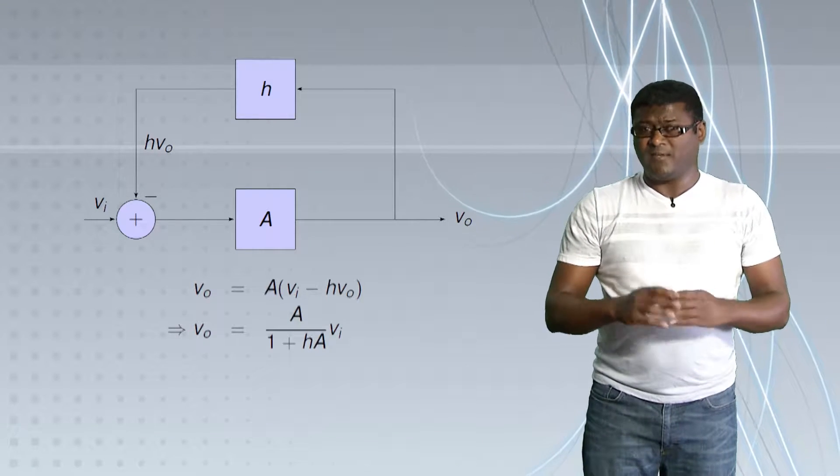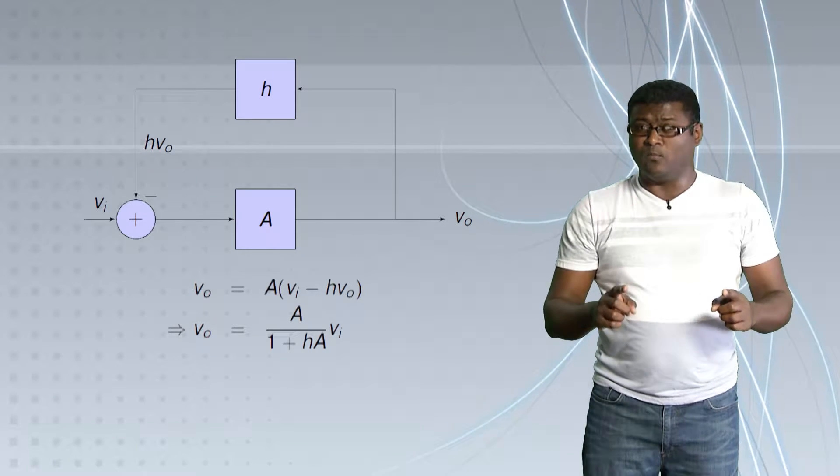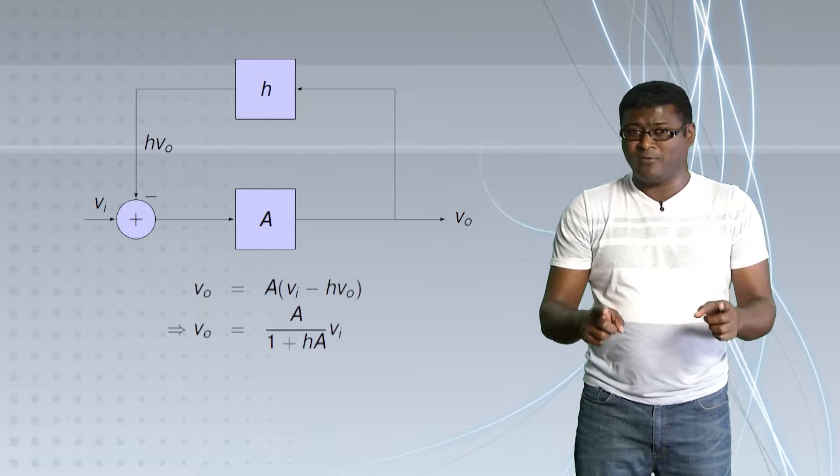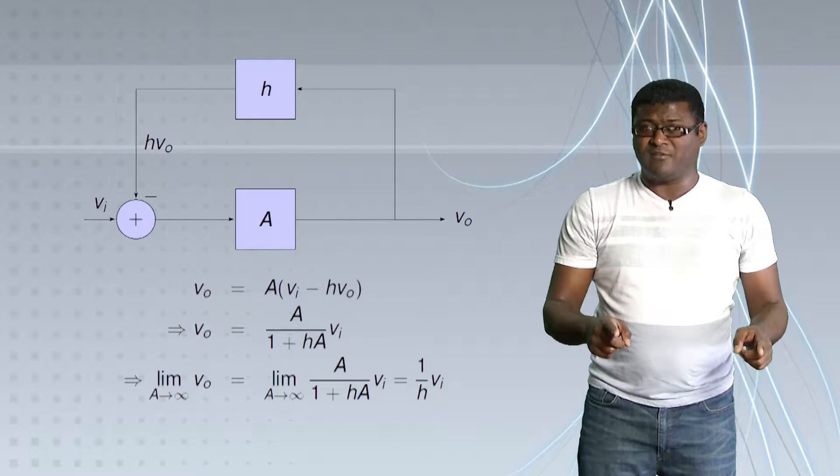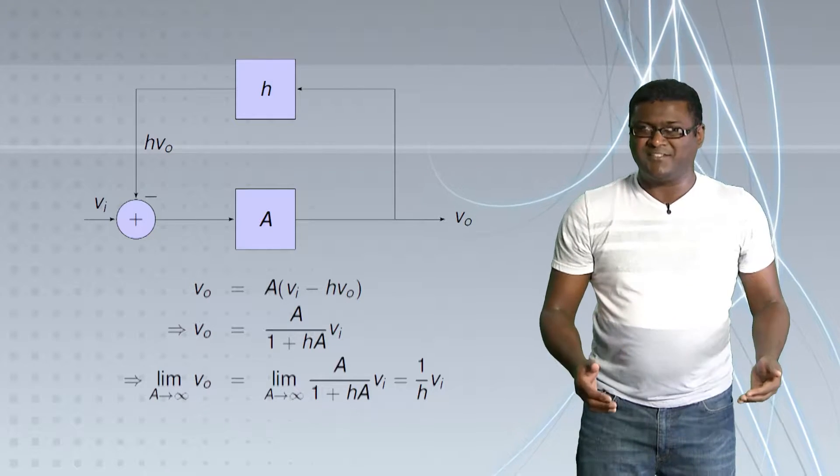Now, this is in terms of A. As you can see, A appears both in the numerator and the denominator. Go back to your calculus now. If you do limit A tends to infinity, what happens to this expression? This becomes 1 over H.